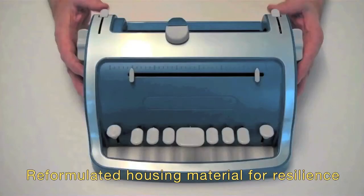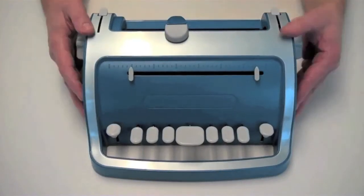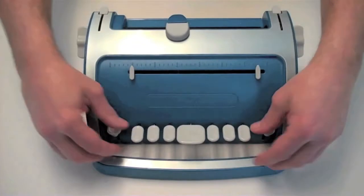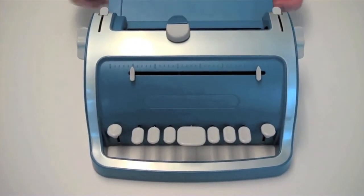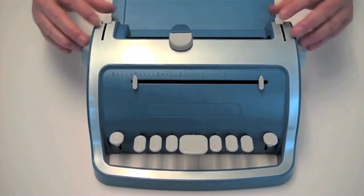All the plastics on the Brailler have been reformulated to make them more resilient. The auto casing, keys, backrest, carriage button, and all the knobs.